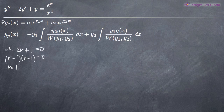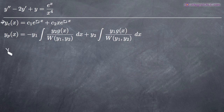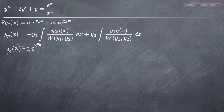With both roots equal to 1, the complementary solution will be c sub 1 times e to the x, plus c sub 2 times x times e to the x. We leave c sub 1 and c sub 2 alone as constants. This is our complementary solution.